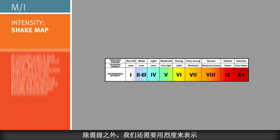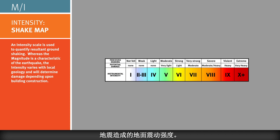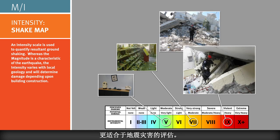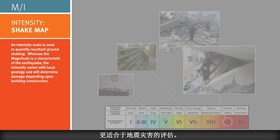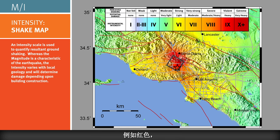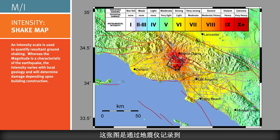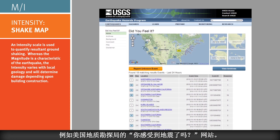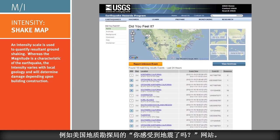It is also helpful to use an intensity scale to quantify ground shaking due to the earthquake. The shaking intensity can vary depending upon distance from the hypocenter and local geology, and is a better measure for assessing damage risk. This is the shake map for the magnitude 6.7 Northridge earthquake, which occurred on January 17, 1994. The areas that experienced strongest shaking are in warm colors, like red, versus areas of mild shaking in cooler colors, like blue and green. Ground shaking recorded by seismic sensors is used to make the shake map. We can also make subjective intensity maps based on reports from local people through online resources, like the Did You Feel It? USGS webpage.